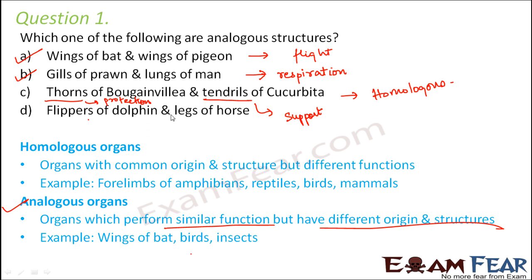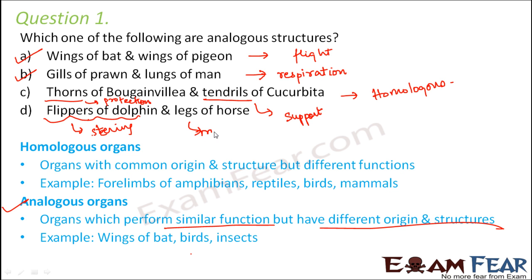Option four: flippers of dolphin and legs of horse. The flippers of dolphin help in steering or stopping in water — they do not help them move forward; they help them change direction or stop. Whereas legs in horse help them to move forward, either in walking or running. So their functions are different, and therefore these are also examples of homologous organs. In this question, even though it asks for one answer, both option A and option B represent analogous structures.